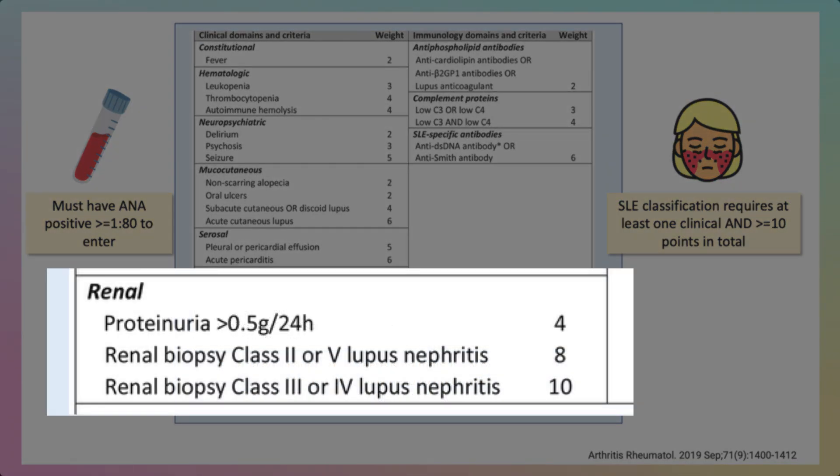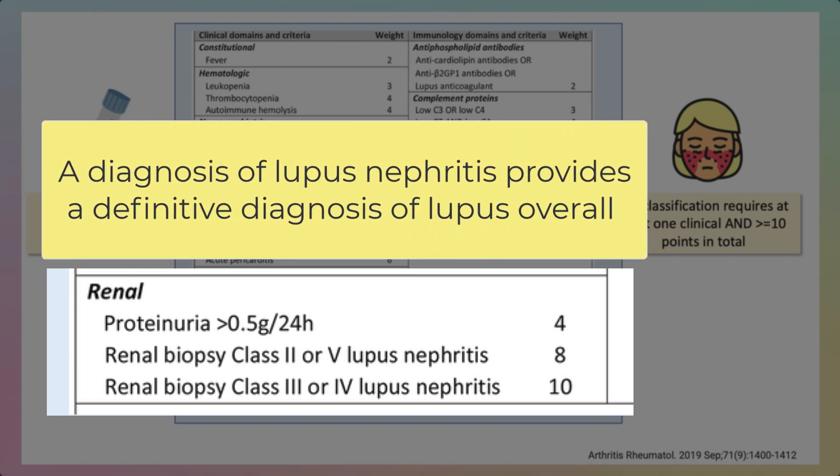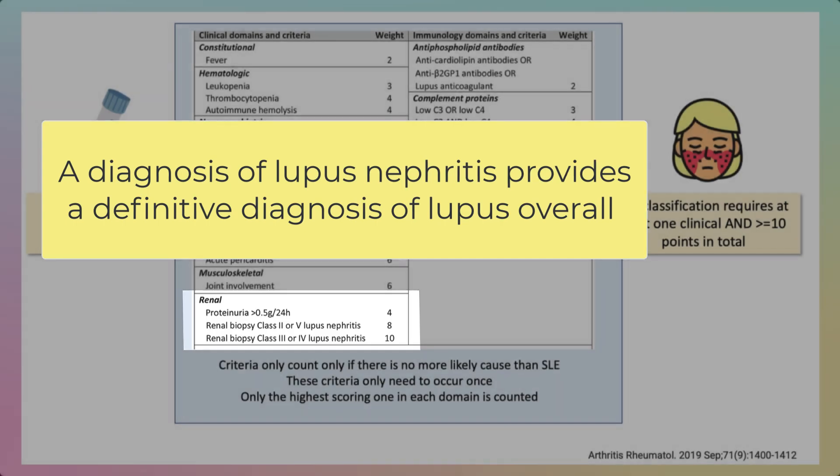You need about 10 points to qualify as having lupus, but you can see that if you have a renal biopsy showing class 3 or class 4 lupus nephritis, this is pretty much all the points you need straight away. So in that sense, a diagnosis of lupus nephritis will serve as a definitive diagnosis of lupus overall.